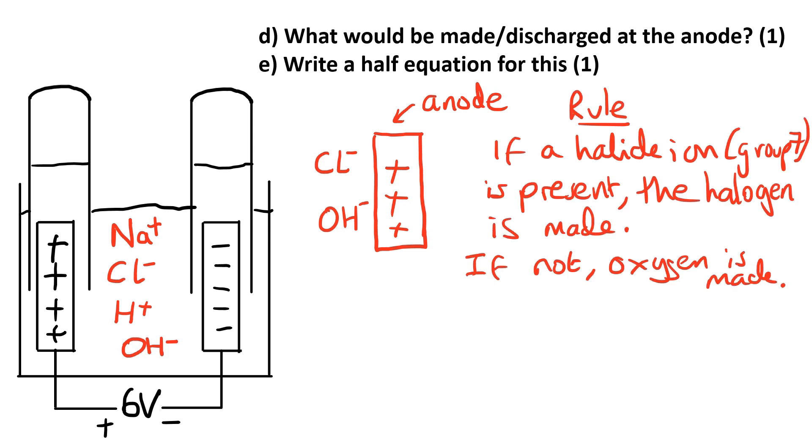The rule for this electrode is if we've got a halide ion present (that's anything from group 7) then the halogen will be made; if not, oxygen is made. In this case we have got a halide ion because chlorine is in group 7, so that chloride ion turns into chlorine and chlorine is made. At that side we would see chlorine gas collecting in the test tube.